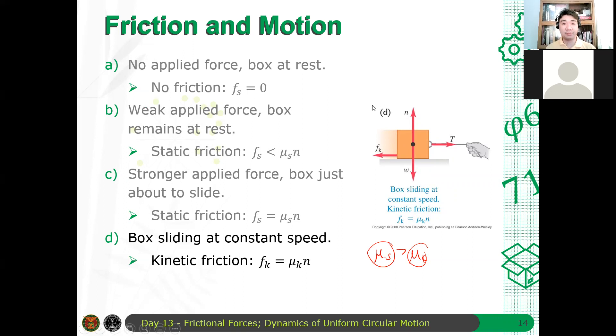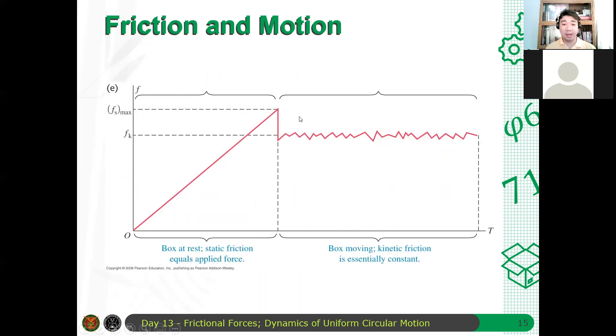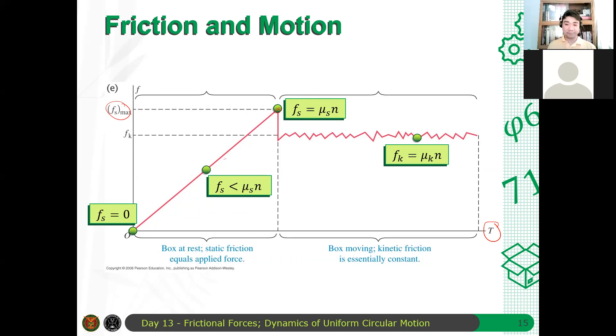Questions? Now, here's a diagram showing the frictional force as a function of tension. As I said, after some time, when you increase the frictional force as a function of tension, it's static friction until it reaches the critical point, which is when the static friction is proportional to the normal force. After that, the object will move with constant velocity and hence it will reach this point wherein the kinetic friction is proportional to the normal force. Questions? Any questions?